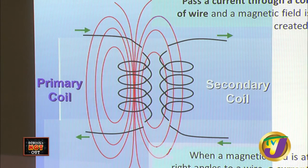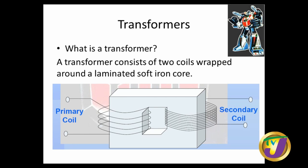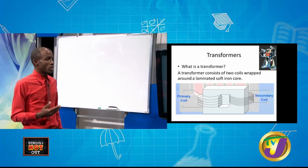We're going to take a break. When we come back, we'll delve deeper into the transformer and hopefully look at an actual question. A transformer consists of two coils essentially wrapped around a laminated soft iron core. Laminated means it's in sheets packed together. Soft iron means it's able to magnetize and demagnetize quickly, which is what you want for a soft iron core.